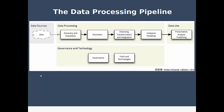If we look at the data processing pipeline and how most data projects flow: everything starts with a data source — a database, a file, a website, an application — and you want to extract data from that source to start making use of it. Part of the extraction process is also to discover whether the data has use for you. Once you've selected your data source, you move to the data cleaning and transformation part — this is where you make sure your data meets a schema, remove duplicates, remove typos, and split or join fields together.